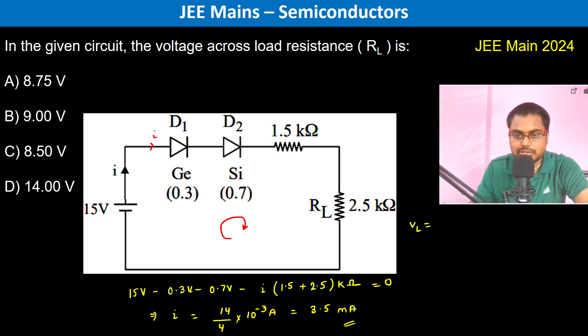So therefore the voltage across the load resistance is equal to I into RL, which is 3.5 into 10 to the power minus 3 ampere into 2.5 kilo ohm. So kilo is 10 to the power 3. This is gone, this is gone. So 3.5 into 2.5 volts.